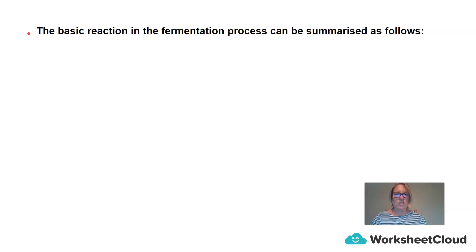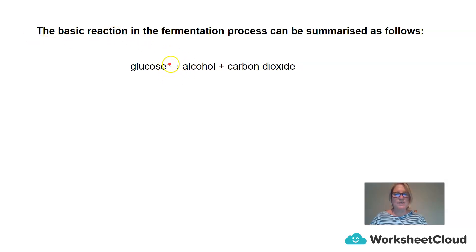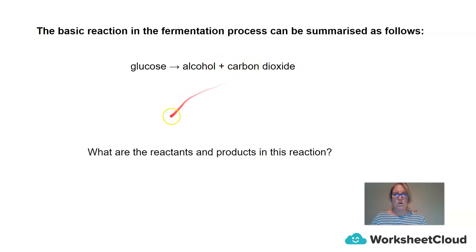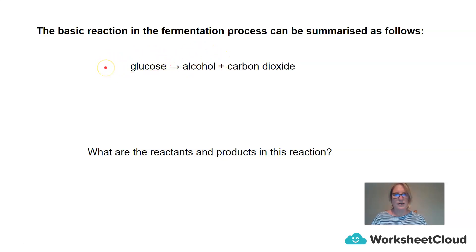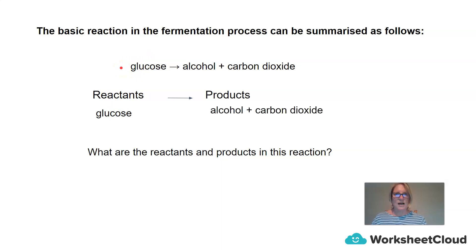So what is the basic reaction in the fermentation process, and is there a way for us to summarize it? We have glucose — this arrow represents a chemical reaction — and we have alcohol plus carbon dioxide. To find the reactants and products, we look at our word equation and find the arrow. Everything to the left of the arrow is the reactants, and everything to the right of the arrow is the products. So glucose is the reactant, and alcohol and carbon dioxide are the products.